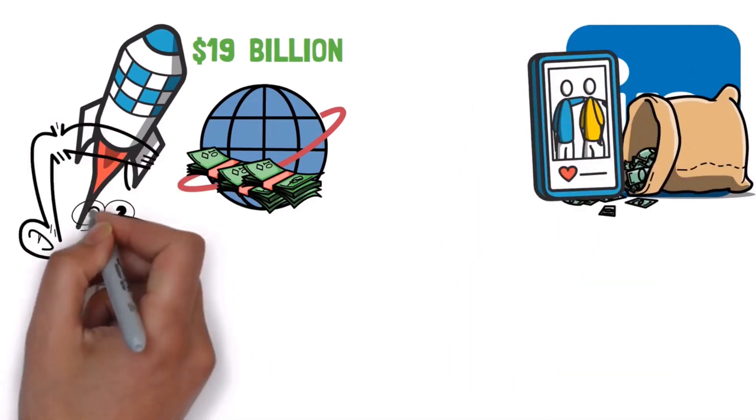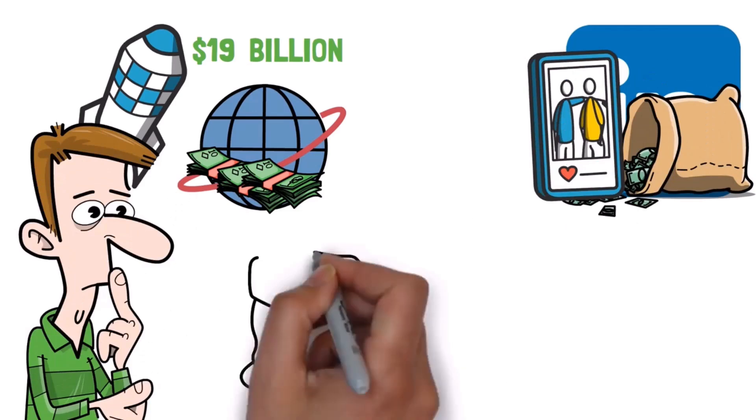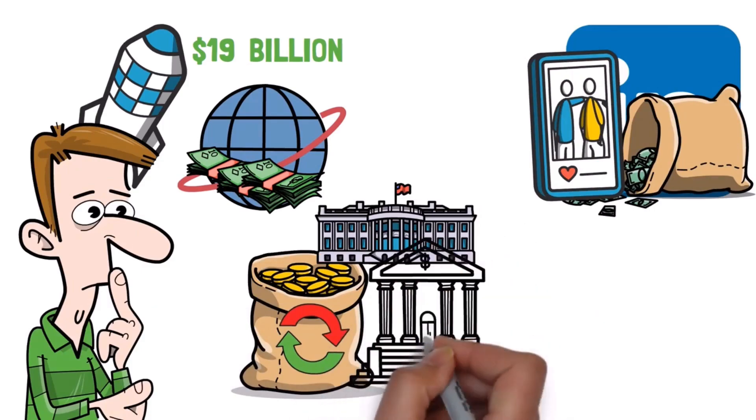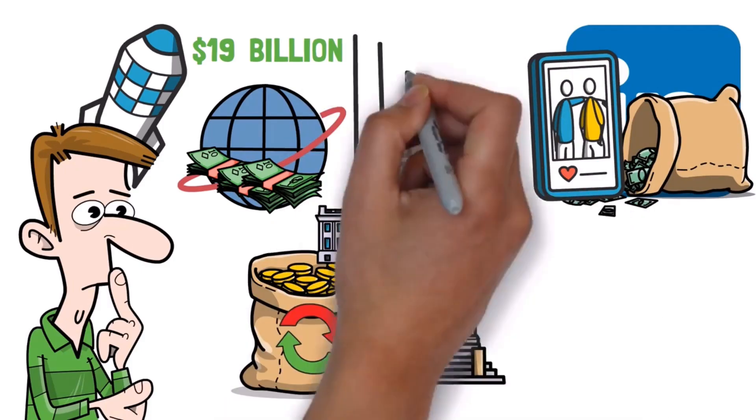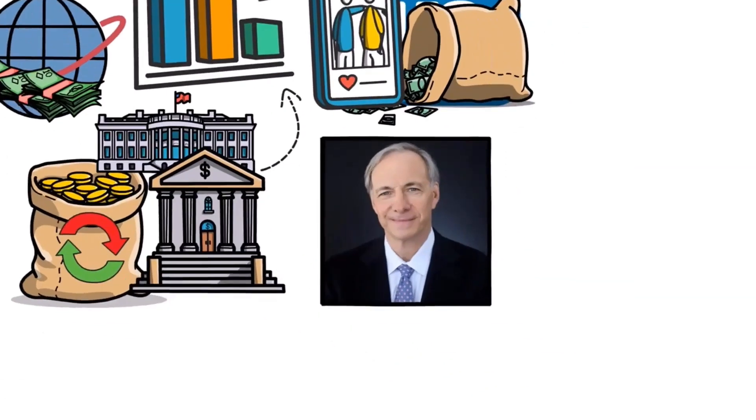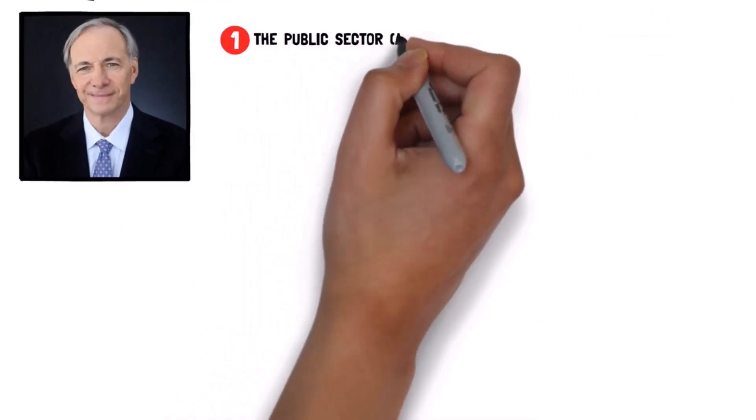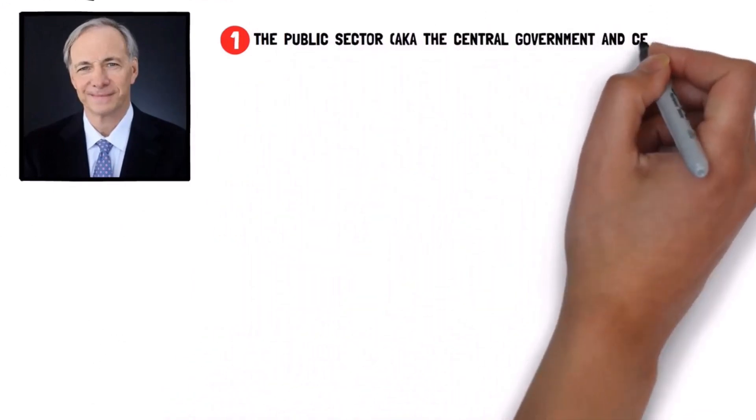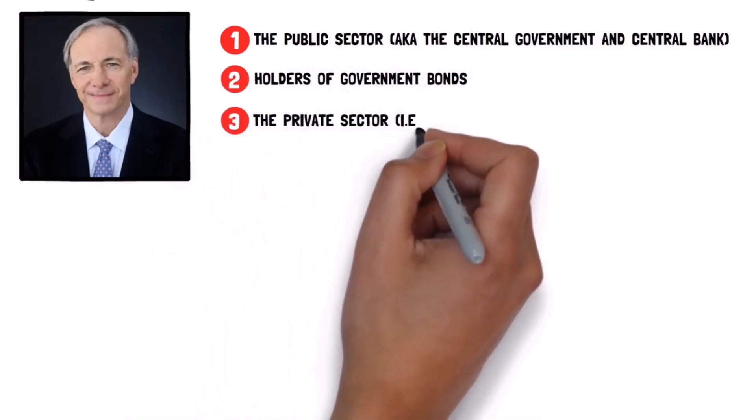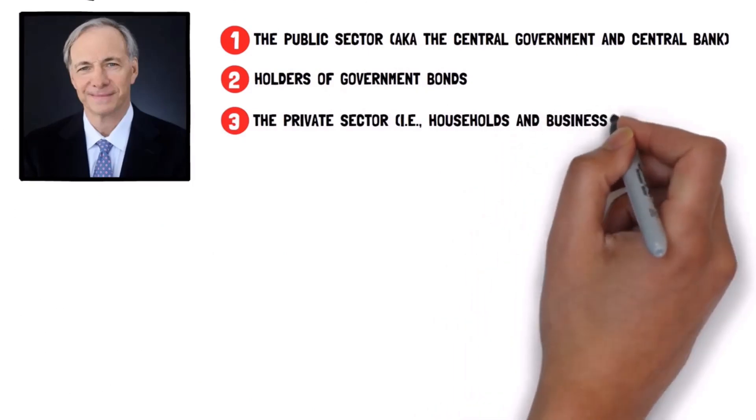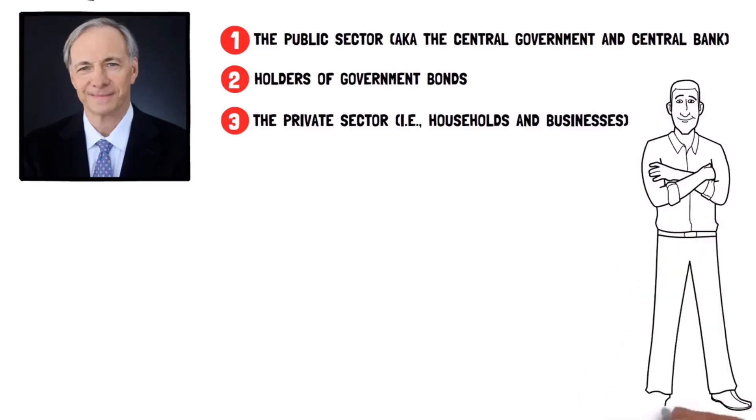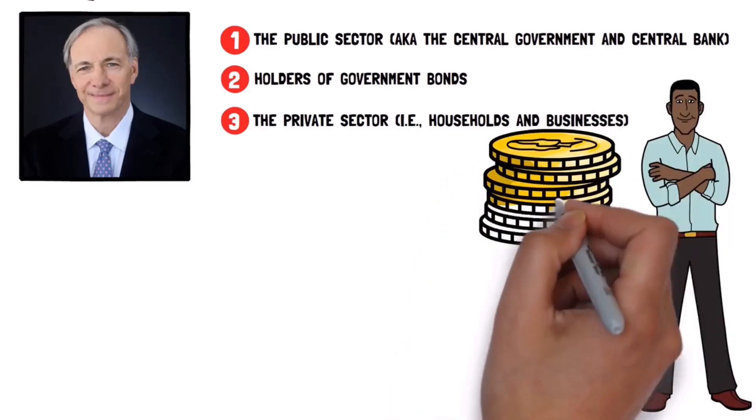So what's this wealth transfer Ray refers to? He's referring to the transfer of trillions of dollars over the last few years from governments and central banks to citizens, which is actually helping average Joes handle the current economic downturn. Dalio notes there was a big government-engineered shift in wealth from one, the public sector, aka the central government and central bank, and two, holders of government bonds, to three, the private sector, that is, households and businesses. This change helped regular people and businesses stay financially healthy during tough economic times, but it made the government's finances look worse.